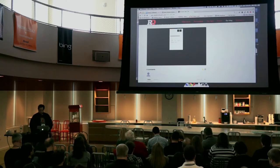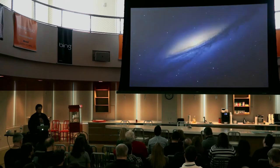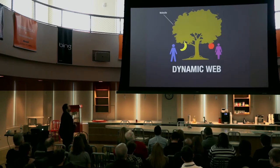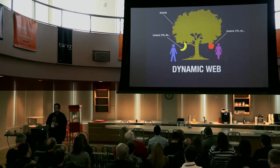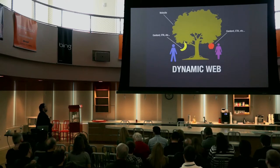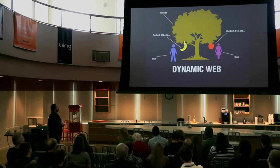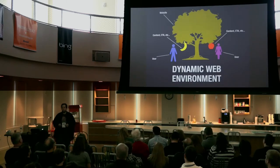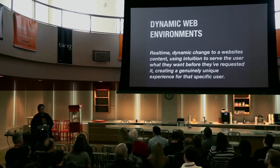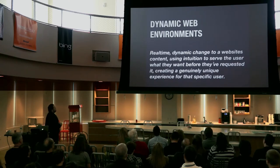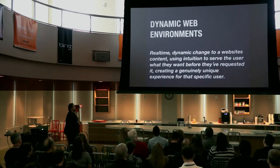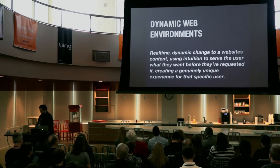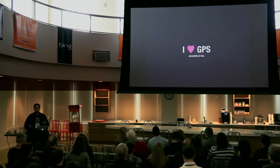We take all these things we've been working on and we want to really take it to the next level. The first thing we needed to do was really define what we mean by a dynamic web. You look at a tree — this is the website — and you have your content. Two different people are looking for two different things, but you can create a dynamic web environment where you're serving that fruit to those individuals without them having to look through the tree. It just arrives. So I defined this as: real-time dynamic change to a website's content using intuition to serve the user what they want before they've requested it, creating a genuinely unique experience for that specific user.